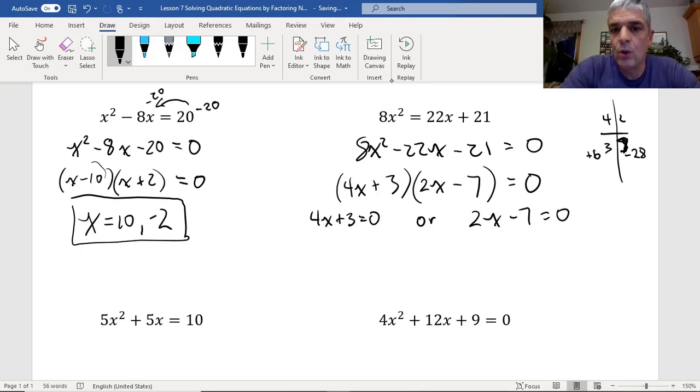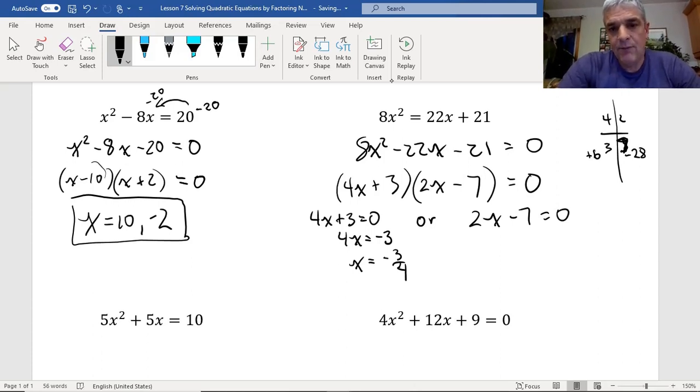So in this case, the 3 will come over to the other side. That'll give me 4x equals minus 3. And then in the end, I get x equals minus 3 over 4. And that's how I write it. I don't generally change it away from a fraction form. I'll get a lot of kids who will write it as 0.75 and whatnot, but I really don't want that. And I would prefer it left as a fraction.